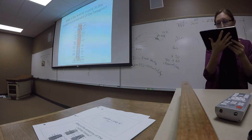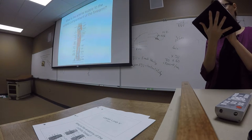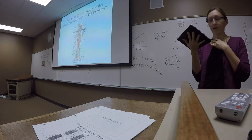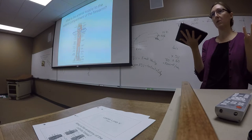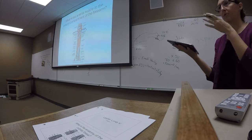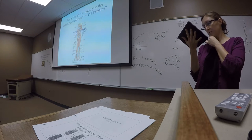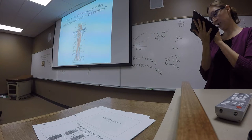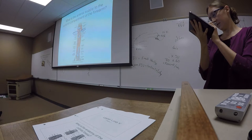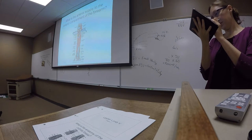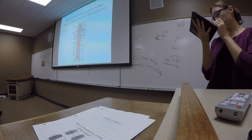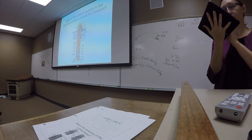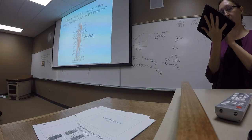For arterial supply to the anterior compartment, remember we have the branching of the brachial artery into our radial and ulnar arteries. The radial artery sends branches to supply the lateral structures, while the ulnar artery helps supply medial structures. The ulnar artery also sends a major branch — the common interosseous artery — which branches into the posterior interosseous artery and the anterior interosseous artery. The anterior interosseous artery is important for supply to the deep muscles of the anterior compartment.